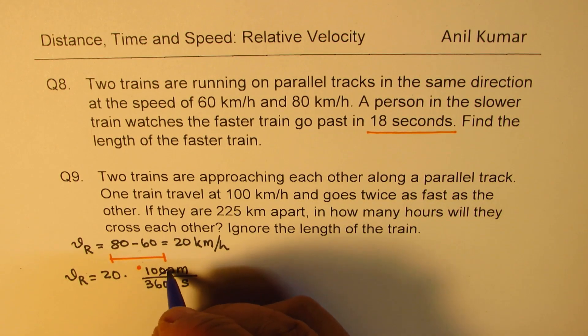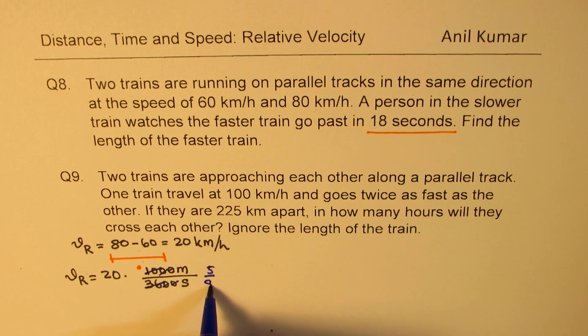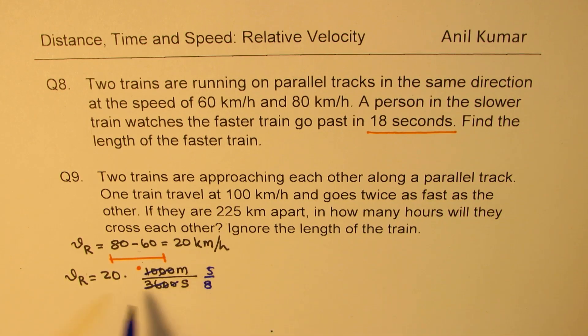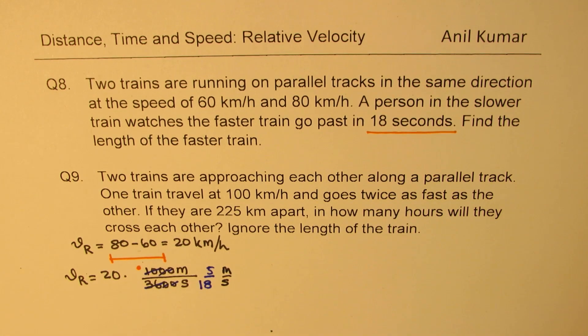When you do this, and you should actually remember this part, dividing by 2s, what we get here is a factor which is 5 over 18. 5 over 18 is a very important factor to convert from kilometers per hour to meters per second.